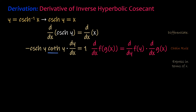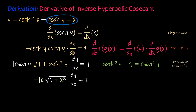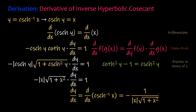Afterwards, express the hyperbolic cotangent of y in terms of x. Use a hyperbolic identity to express hyperbolic cotangent of y in terms of hyperbolic cosecant of y. Then, substitute x equals the hyperbolic cosecant of y. Divide both sides of the equation by the square root of quantity 1 plus x squared. Therefore, the derivative with respect to x of the inverse hyperbolic cosecant of x is equal to the negative of 1 all over the product of the absolute value of x and the square root of quantity 1 plus x squared.